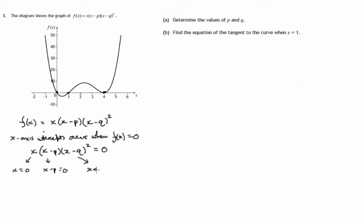And this one, x minus Q times x minus Q, x minus Q squared is equal to 0. And in this case, x equals 0 goes with this point. x equals P will go with this one, where x is 1. The reason it doesn't go with this one is because the curve touches the x-axis when x equals 4.